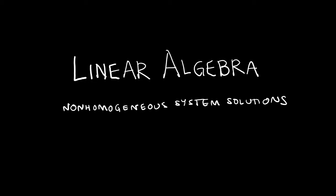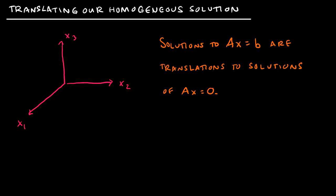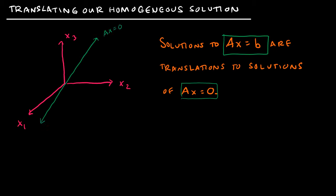Now that we've looked at homogeneous system solutions, let's take a look at non-homogeneous system solutions. We're going to look at non-homogeneous systems in the form AX equals B, whereas in our last video dealing with homogeneous solutions, we had AX equals 0. Visually, if AX equals 0 gives us a line, then AX equals B is just a translation of that line — shifted to make it work out to where AX equals B.